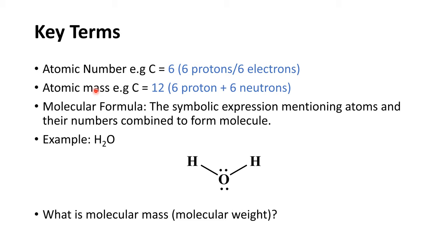The next terminology is molecular formula. A molecular formula is a mathematical and symbolic expression mentioning atoms and their numbers which have combined to form a molecule. The simplest familiar example is the water molecule, written as H₂O. This tells us which atoms make up water: there are two hydrogen atoms and one oxygen atom. This symbolic expression gives us the idea of what different atoms are present and their total number combining to make a particular molecule. Water is the most abundant substance in the universe.